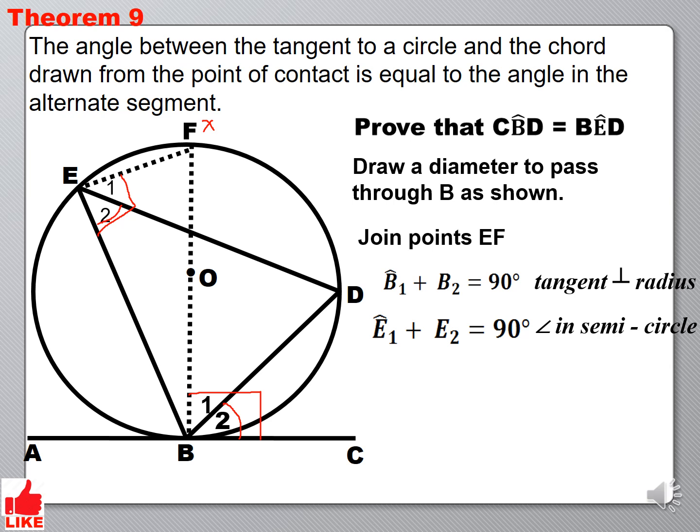Then we now notice something here. If you look at the diagram that I am highlighting in green here, it shows us angles in the same segment. So, what it means is that the angle at point E1, the angle E1 and the angle B1, those two angles are equal to each other because they are angles in the same segment.